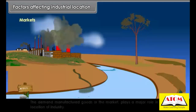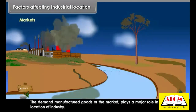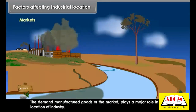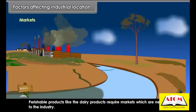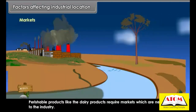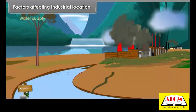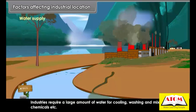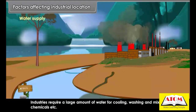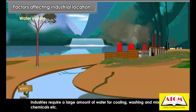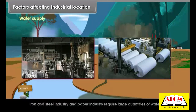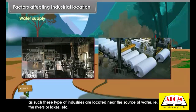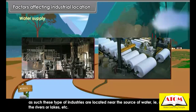The demand for manufactured goods — the market — plays a major role in the location of industry. Perishable products like dairy products require markets nearer to the industry. Industries also require large amounts of water for cooling, washing, and mixing chemicals. Iron and steel and paper industries require large quantities of water, so they are located near rivers or lakes.